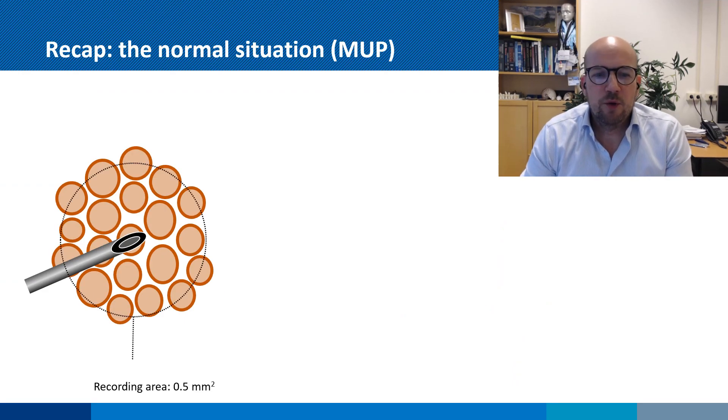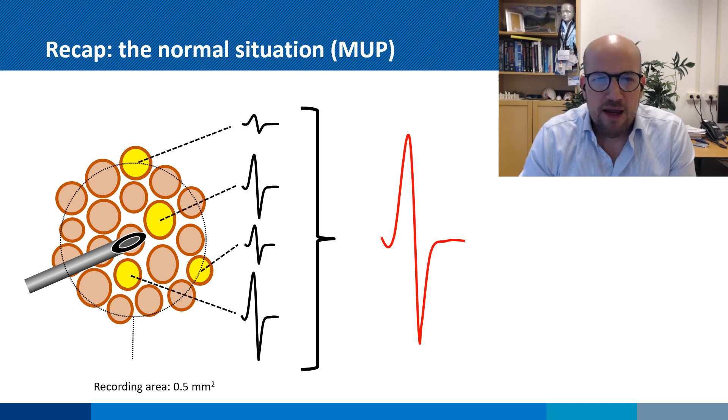As you recall, when we perform a needle EMG, we stick a needle inside the muscle and we aim to record the electrical activity of muscle fibers. All muscle fibers connected to the same motor unit will provide a motor unit potential, as you can see here.